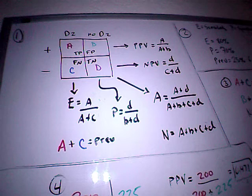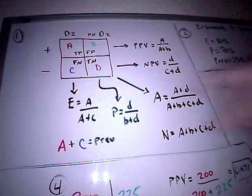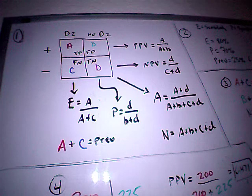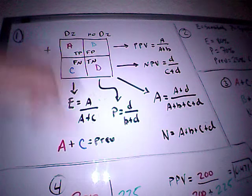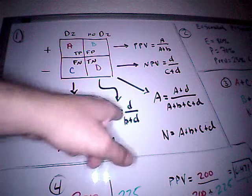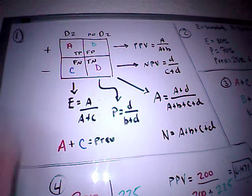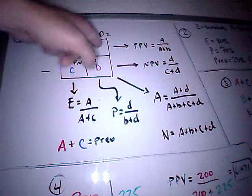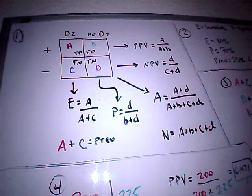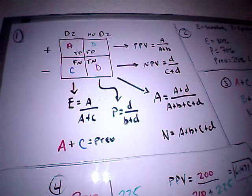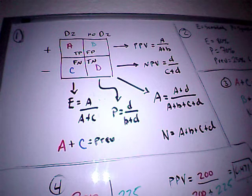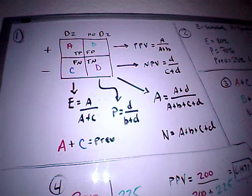Going down this way, I have A here, which is the accuracy, and that is A plus D divided by everything, A plus B plus C plus D. I also have my sensitivity, or what we will call E here, and sensitivity is simply A divided by A plus C. And then P is my specificity, which is going to be D divided by B plus D. Should also be noted that A plus C will equal my prevalence.